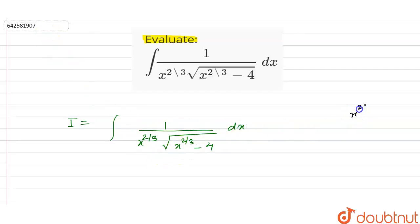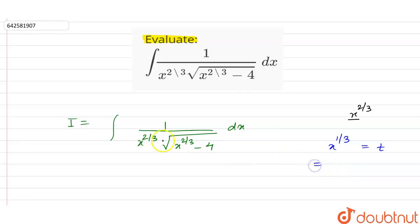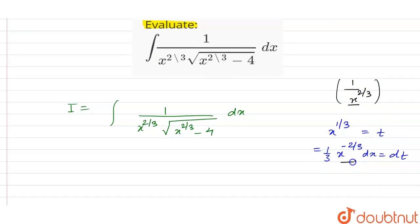If we look at the term x raised to power 2/3, we have 1 by x raised to power 2/3 and dx. We let x raised to power 1/3 equal to t. Differentiating, we get that 1/3 times x raised to power minus 2/3 dx equals dt, which gives us x raised to power minus 2/3 dx equals 3 dt.